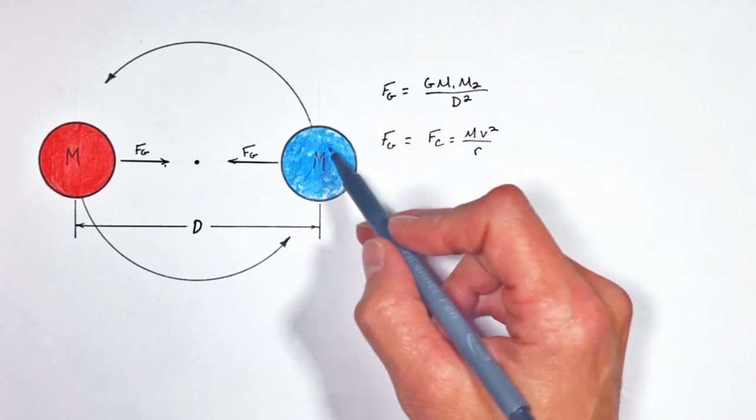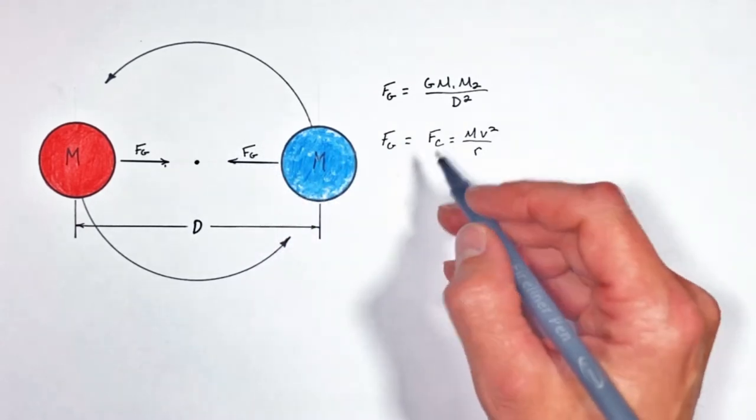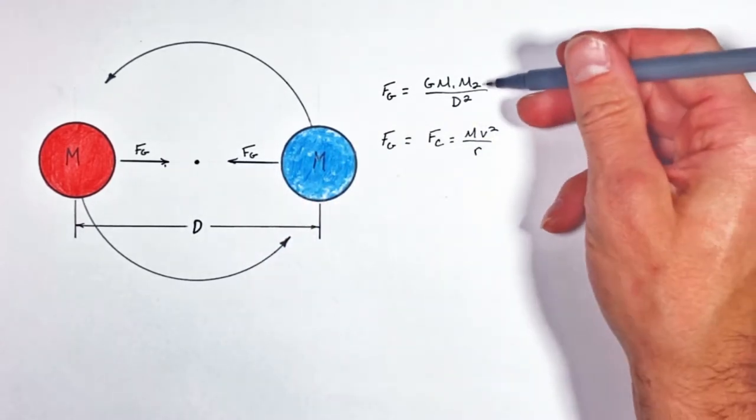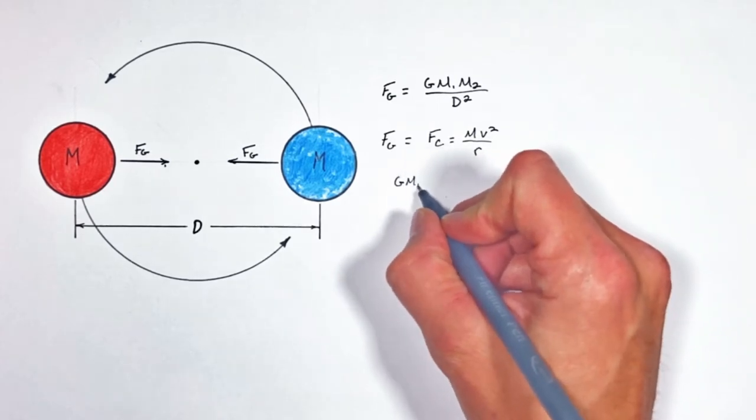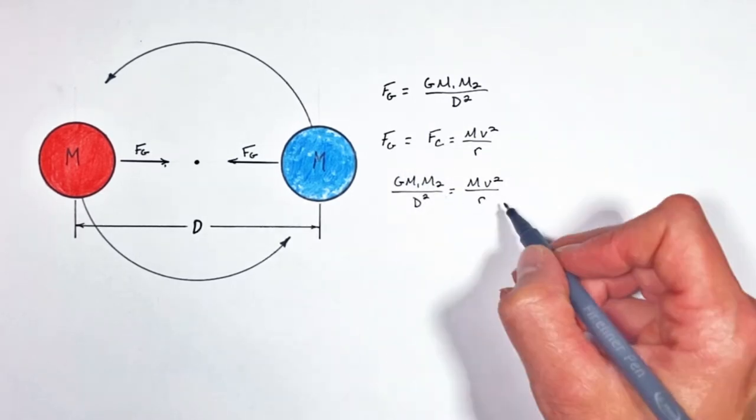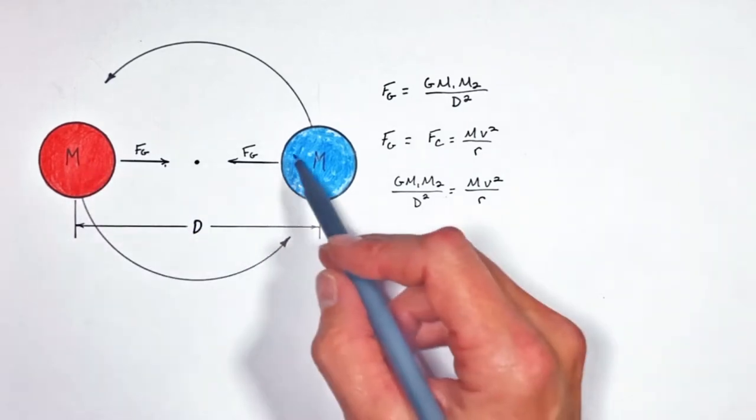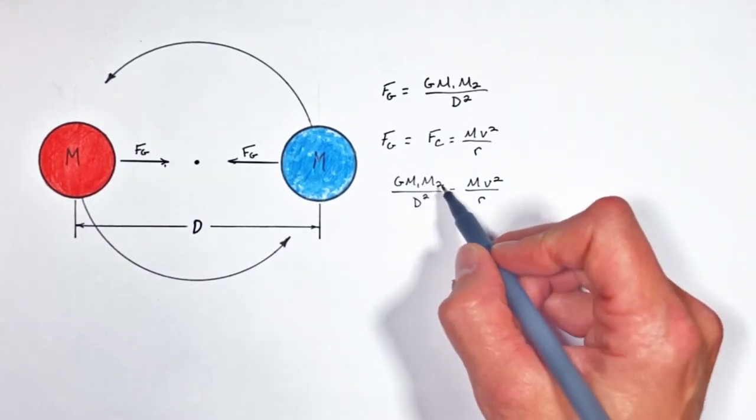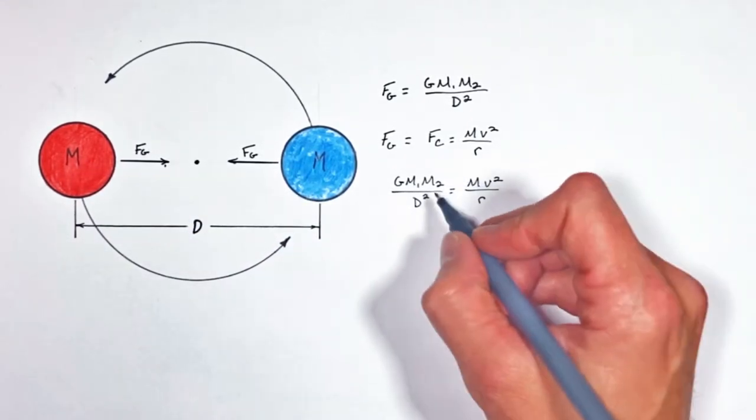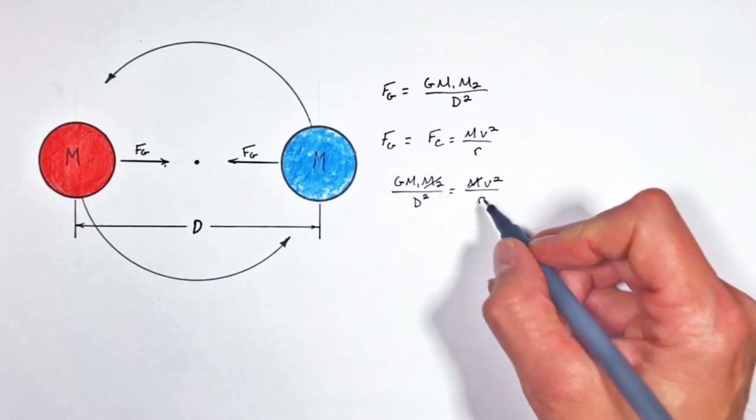Looking at this object right here, it's that force of gravity that is acting as the centripetal force, so setting these two equations equal to each other we get this. Now realize because our two masses are the same, m1 and m2 are just m, so ultimately we're going to get a partial cancellation here on our mass.